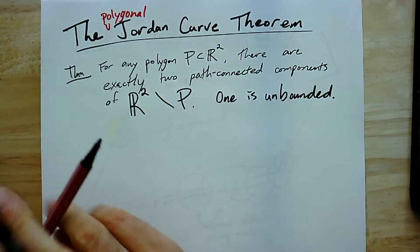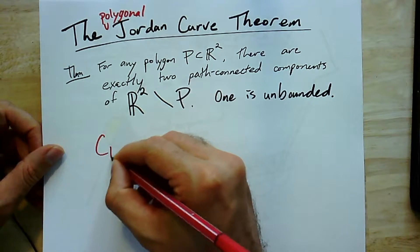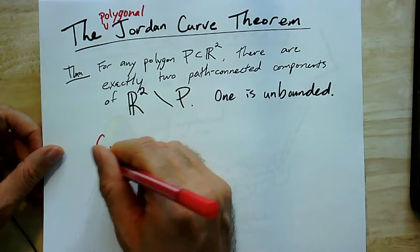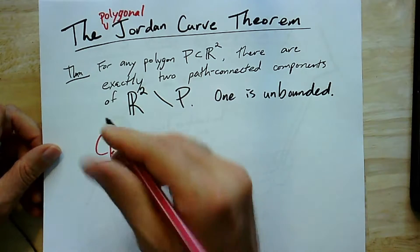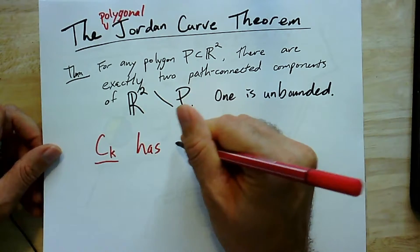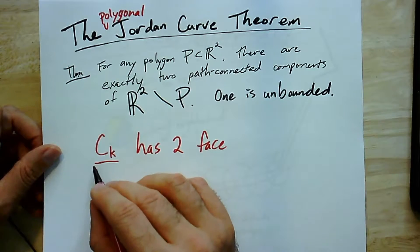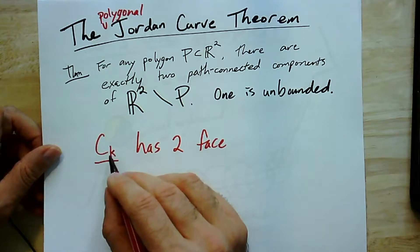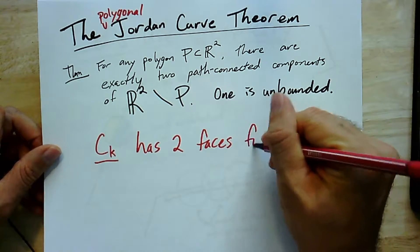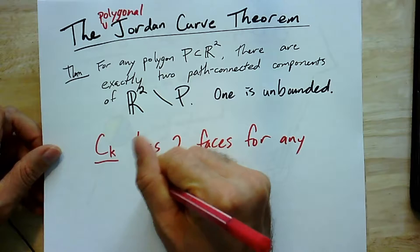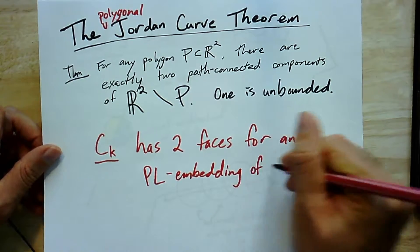Now, in terms of graph embeddings, explicitly, this is like saying if I took a cycle graph C_K, I take its embedding, so this is like the image of an embedding of the cycle in the plane, that this has two faces. And I may use this notation a bit, just for short, so I don't have to write the embedding of the geometric realization of the graph. So it has two faces.